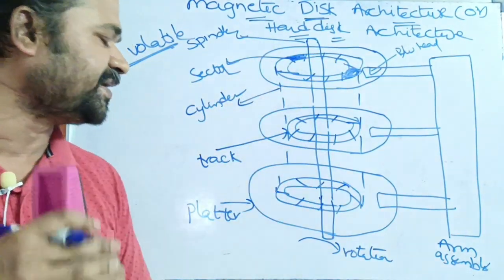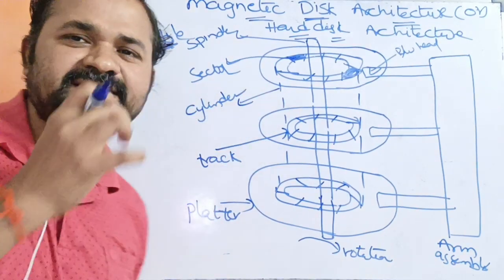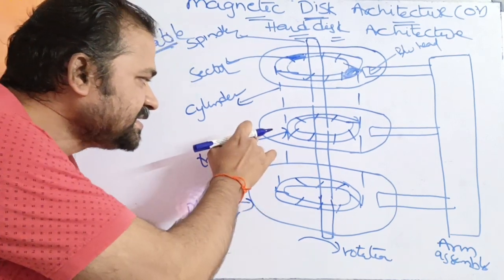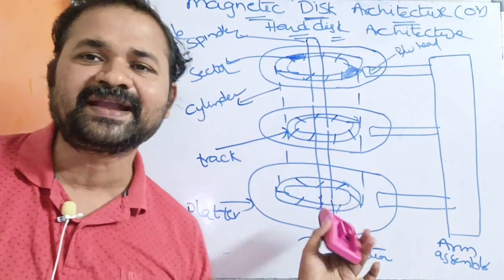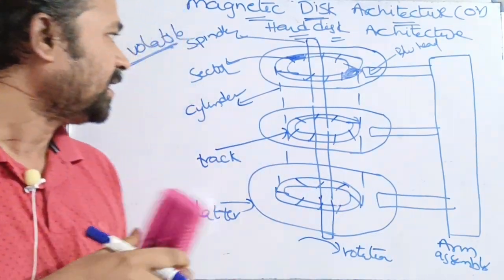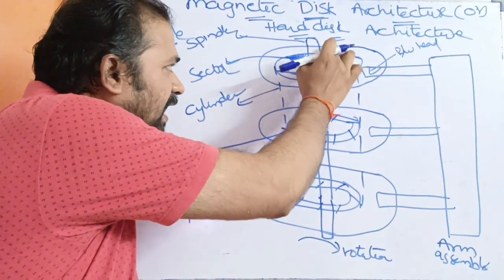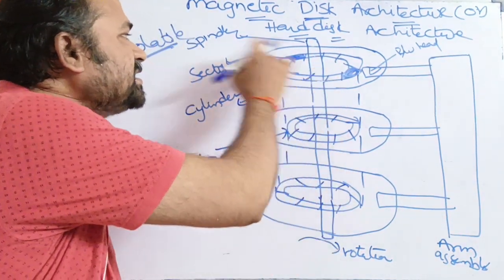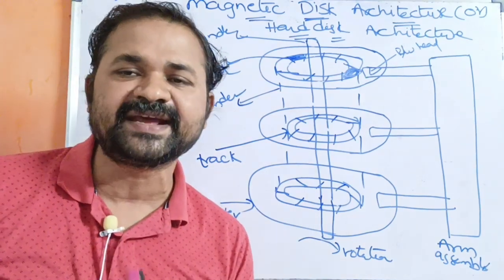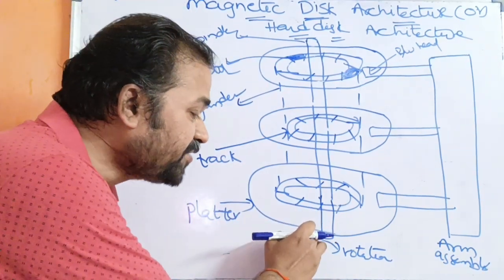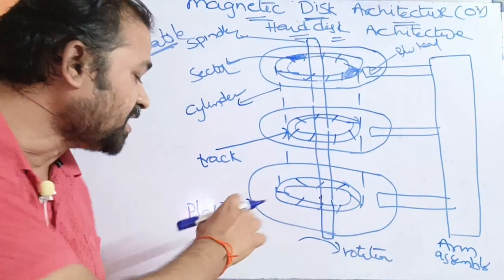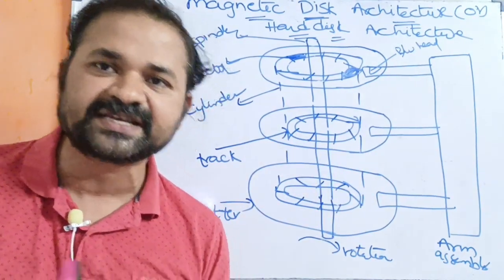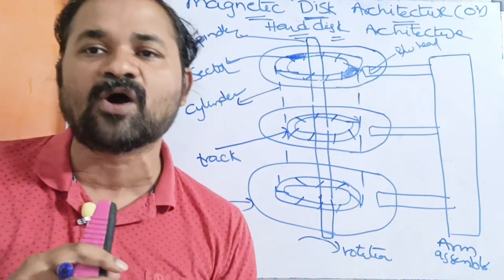This is the architecture of a hard disk. The hard disk is a collection of platters. Here we have three platters: platter 1, platter 2, and platter 3. A platter is just like a CD. The platters are connected together with the help of the spindle. The spindle is mainly useful in order to connect all the platters together. We can rotate the spindle, and if we rotate the spindle, then automatically the platters will be rotated — either in clockwise direction or anti-clockwise direction.